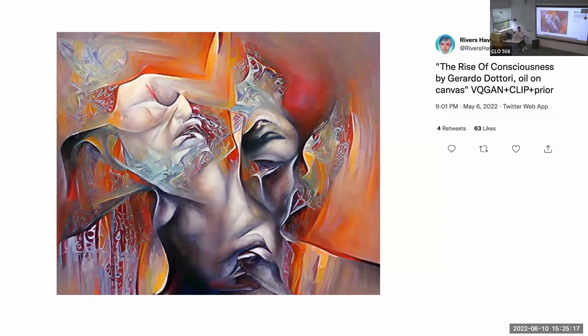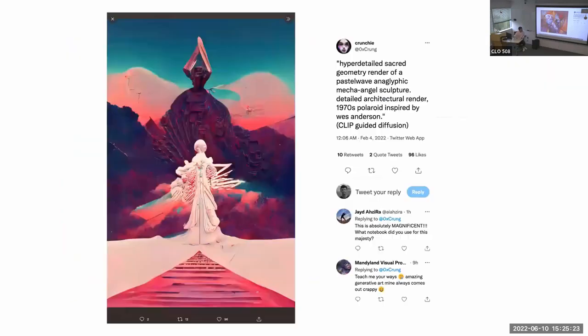So, let's check Twitter. So, this was four months ago, Kowloon City in the style of Wes Anderson. It's a facade image resembling the walled city of Kowloon, with the colors that look like Wes Anderson. And it does not portray a real space. The Chinese is not really Chinese, I think. But it looks believable. Another tweet from the 6th of May named the Rise of Consciousness by Gerardo Dottori, oil on canvas. As you might imagine, Gerardo Dottori did not do this. He died in 1977.